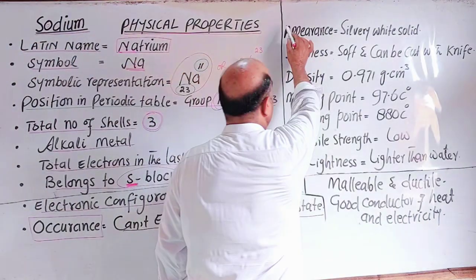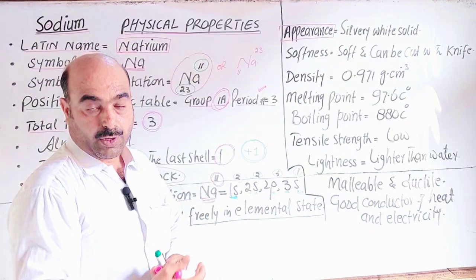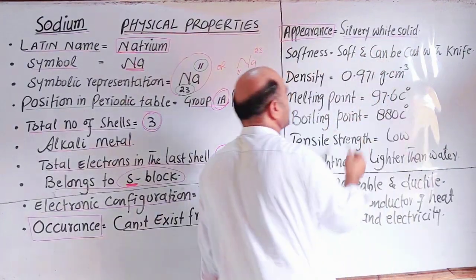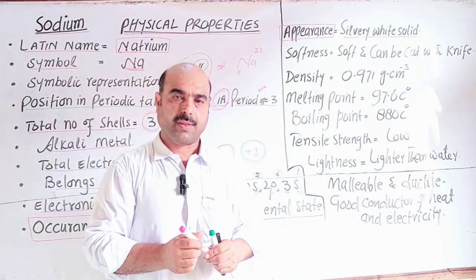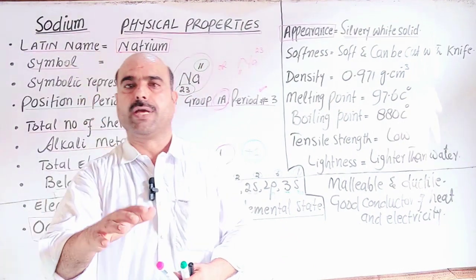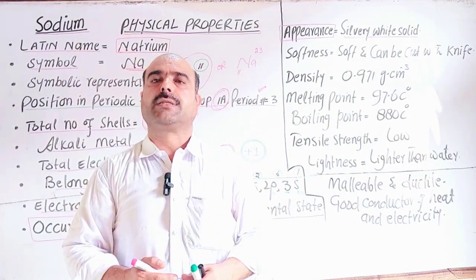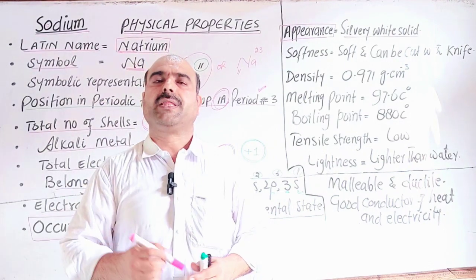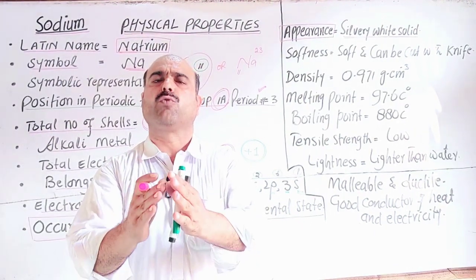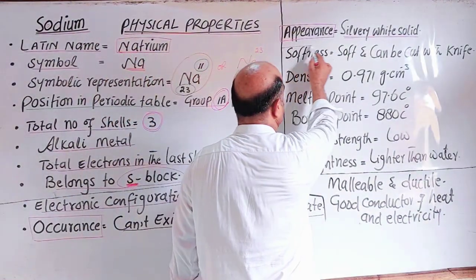Physical properties: Appearance - it is a silvery white solid. It is in solid form with silvery white color. Because it is more reactive, we keep it in plastic containers or kerosene oil to prevent reaction with oxygen and moisture. When freshly cut, the internal cut portion is silvery white.